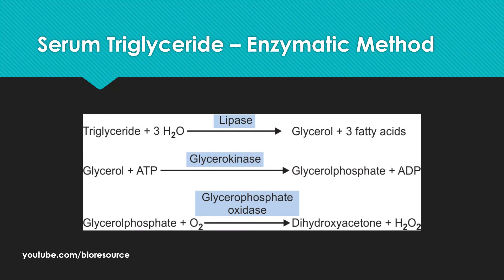Serum triglycerides can also be measured by the enzymatic method. In this, lipase converts triglyceride to glycerol and fatty acids. The glycerol is then converted to glycerol phosphate by the enzyme glycerol kinase, and glycerol phosphate oxidase converts glycerol phosphate to dihydroxyacetone and hydrogen peroxide, which can be quantified.